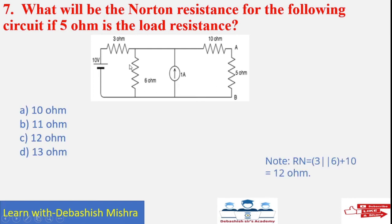Note that 3 ohm and 6 ohm will be in parallel, and 10 ohm will be in series with them, because the voltage source is short-circuited and the load terminal is open. So 3 and 6 in parallel gives 3 × 6 divided by 3 + 6, which is 18 / 9 = 2 ohm, plus 10 ohm equals 12 ohm. So answer C is correct.